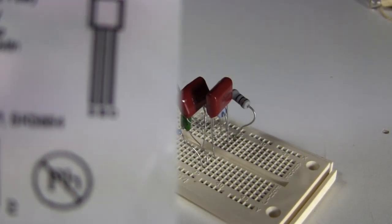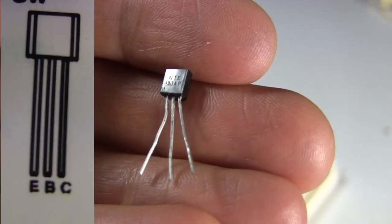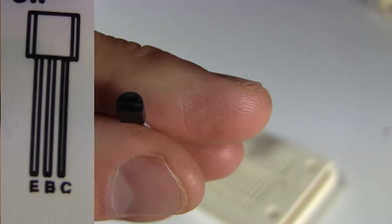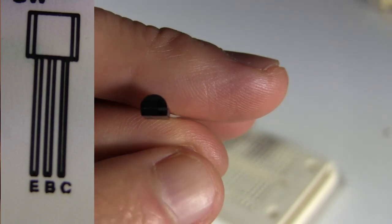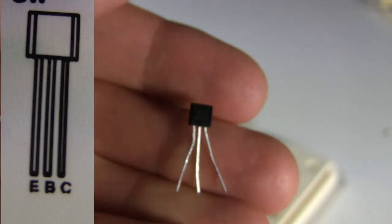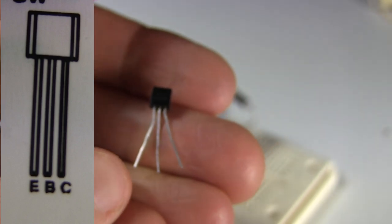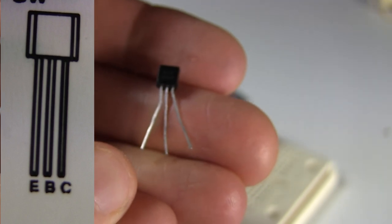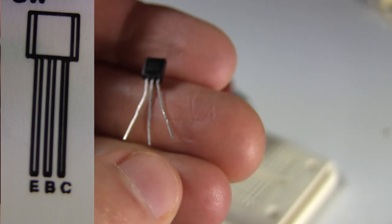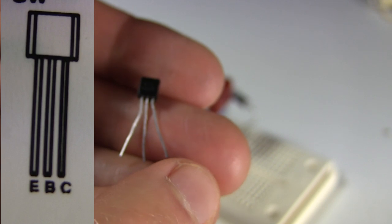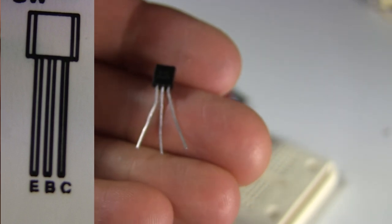This is the packaging that came with my transistor, and there you can see the drawing. The drawing tells me that if I hold the flat end of the transistor towards me, then the wire on the left is the emitter, see the E. The wire in the middle is the base, see the B. And the wire on the right is the collector, see the C.